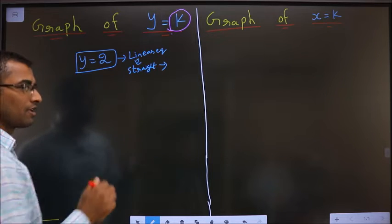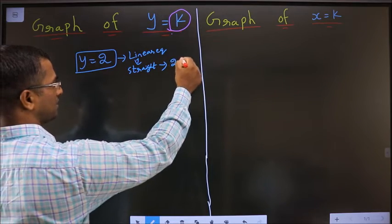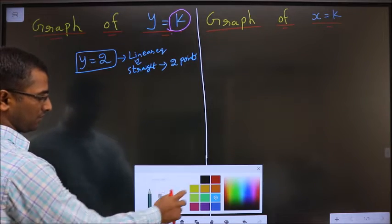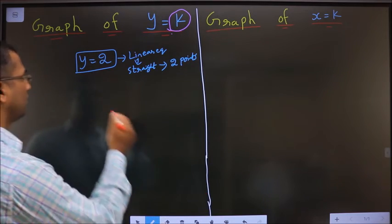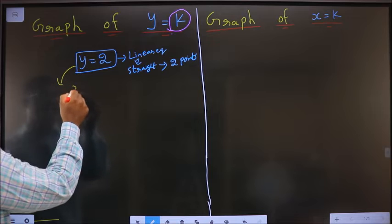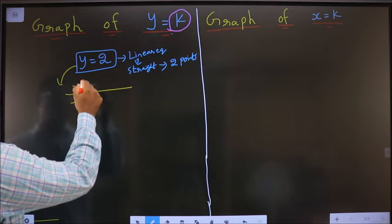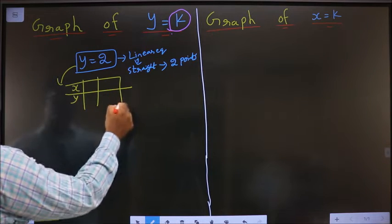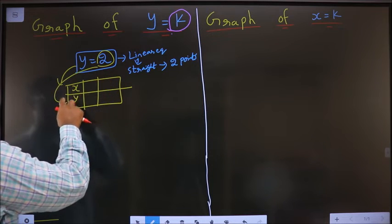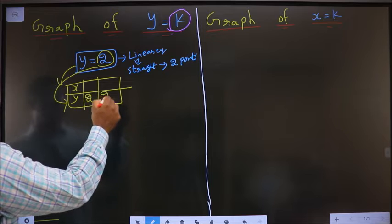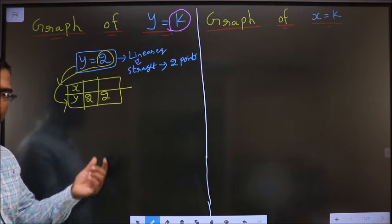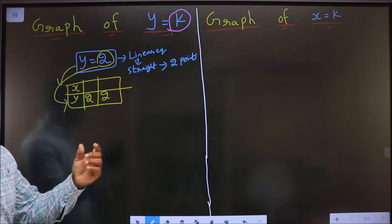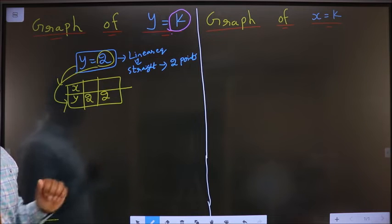To draw any straight line, I should have at least 2 points. To get the 2 points, I need the table. What does y equal to 2 mean? The y value is always 2. Irrespective of whatever values of x you take, y will always remain 2.